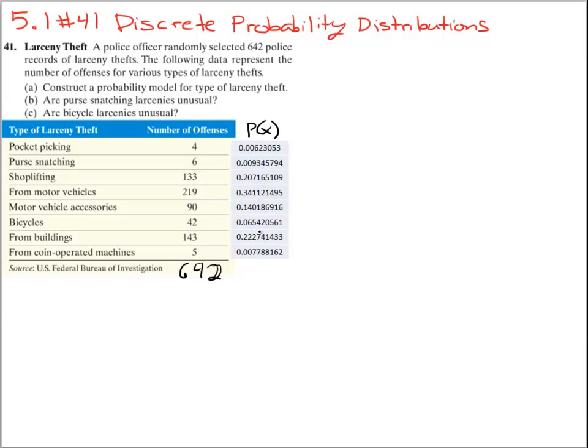Each one of these numbers represents these probabilities, and simply it is just this number divided by the total. Remember, probability of an event is just good over total in its most basic form.